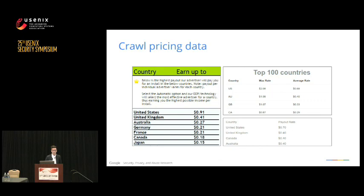These PPI networks often advertise all of their pricing information to attract affiliates. The price for an install in one market may be $0.91, another $2, another $0.70. So on a regular basis, we crawled all of the pricing data available within this market so we could track trends about how much it costs to get an install in the United States or other countries.